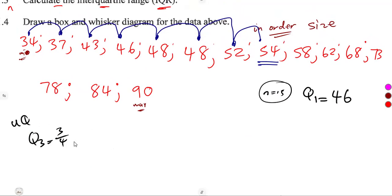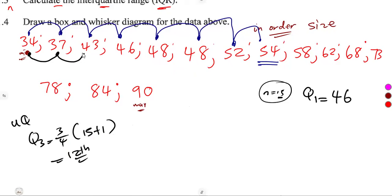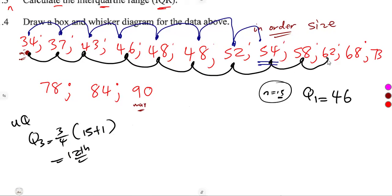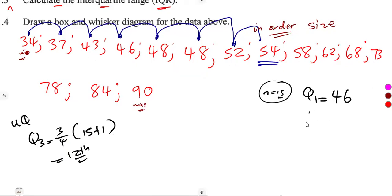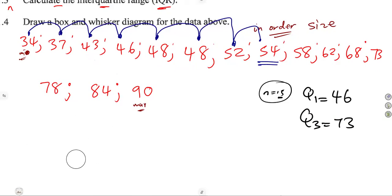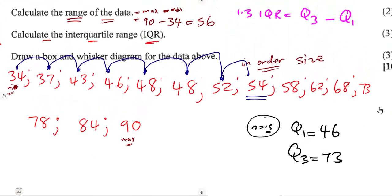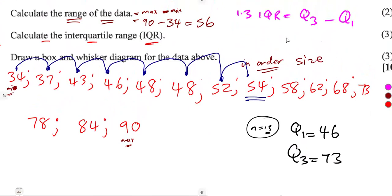For Q3, the upper quartile position is three-quarters of (n + 1), which is three-quarters of 16, giving us 12. So we need the 12th value. Counting: 1, 2, 3, 4, 5, 6, 7, 8, 9, 10, 11, 12 — the 12th value is 73. So Q3 equals 73.